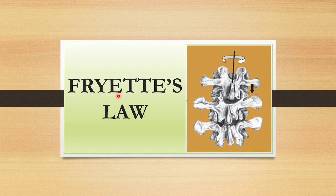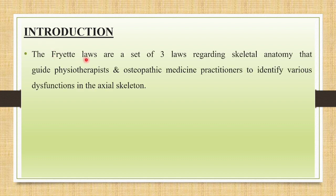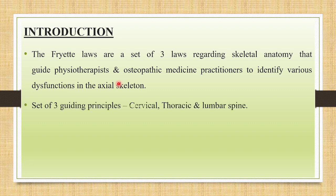In this video, I'm going to explain in detail about Fryette's Laws of Spinal Motion. Fryette's Laws are a set of three laws regarding skeletal anatomy that guide physiotherapists and osteopathic medicine practitioners to identify various dysfunctions in the axial skeleton. They are a set of three guiding principles meant to describe the specific motions of the cervical, thoracic, and lumbar spine. These laws are seen as simplistic, but they do provide a framework from which a clinician can work.